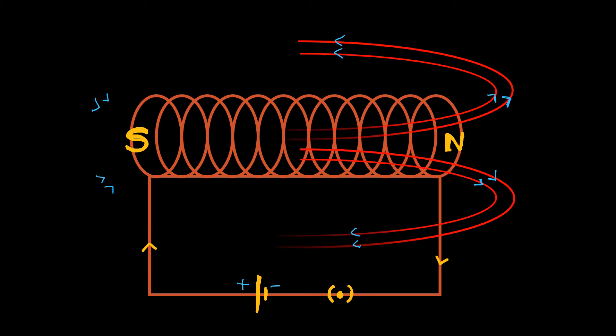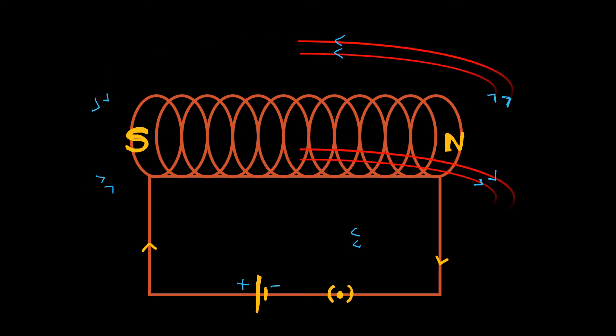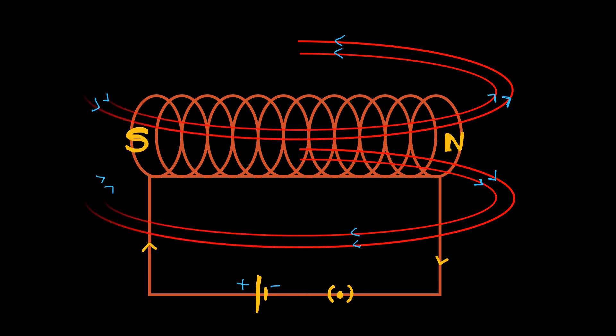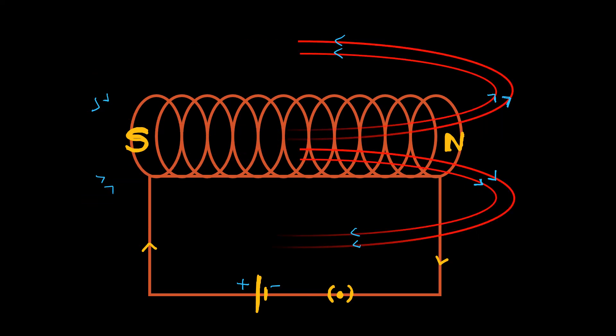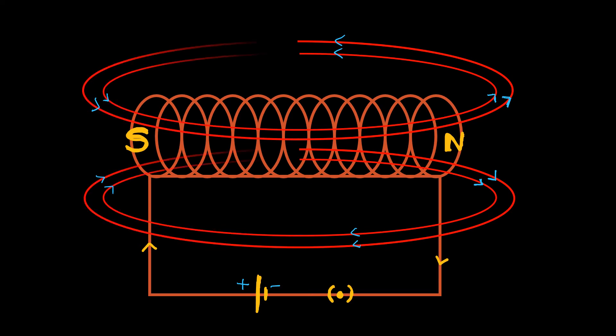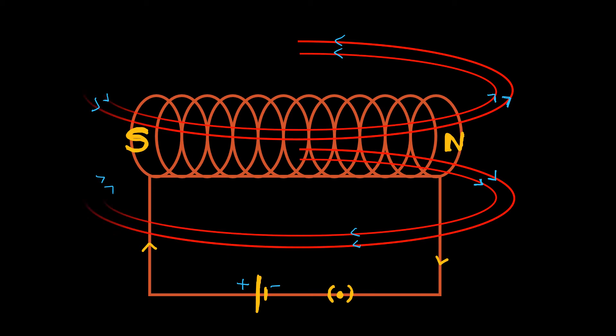A coil with many loops, known as a solenoid, will then behave like a bar magnet. As each current carrying loop in it will contribute to magnetic field. So, current carrying solenoid will behave like a bar magnet.